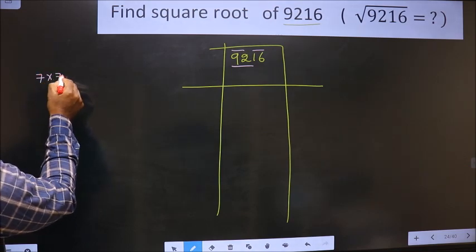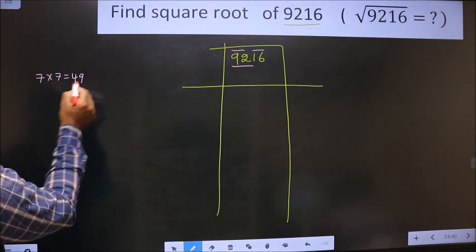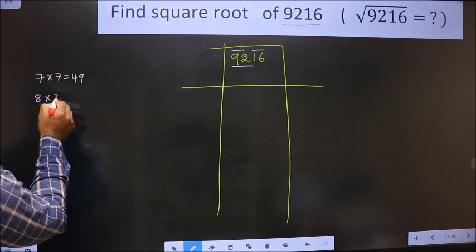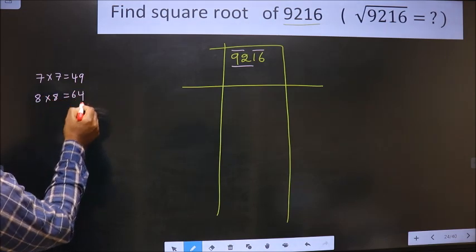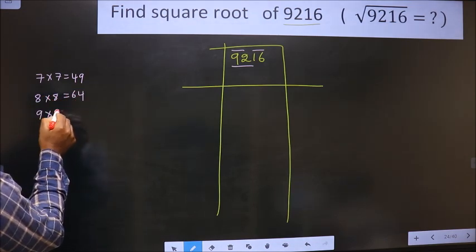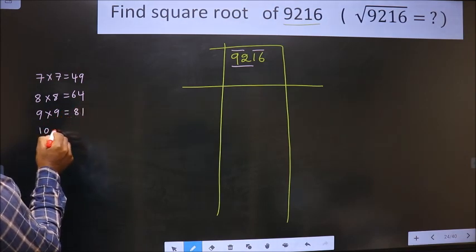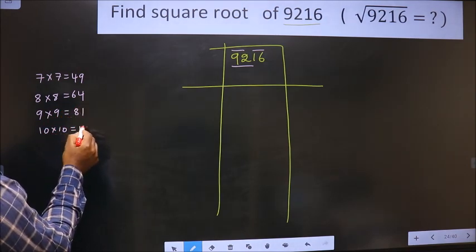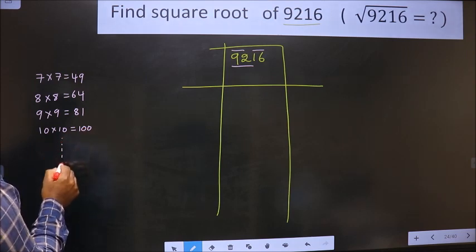That is 7 into 7, 49. 8 into 8, 64. 9 into 9, 81. 10 into 10, 100. And it goes on. These numbers are called perfect squares.